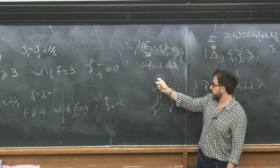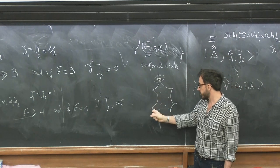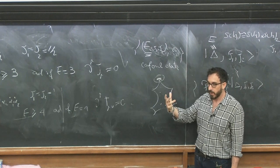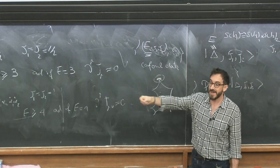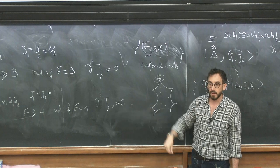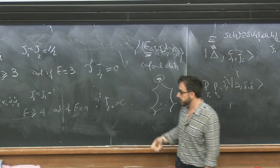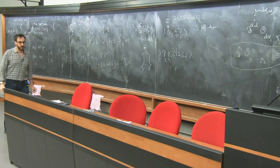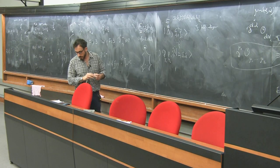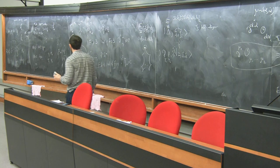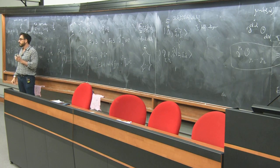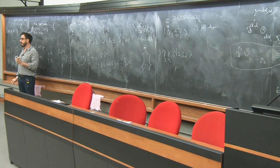The beauty of this approach is that we can characterize or define what the special points are by stating that a special point is a point where you gain, in the limit, higher-spin conserved currents. That was fast, but let's move on.